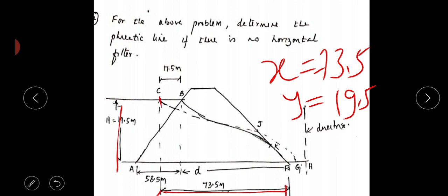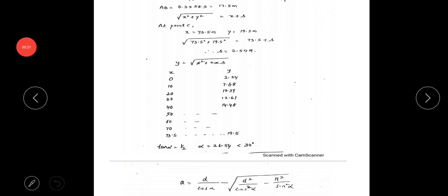For x = 0 what is the value of y, at x = 10 what is the value of y, and for x = 20 what is the value of y? Similarly you have to go for x = 73.5. For the calculation of 'a' we'll be using this formula.